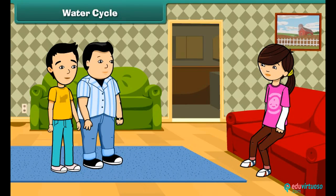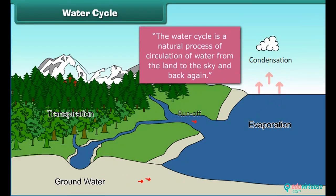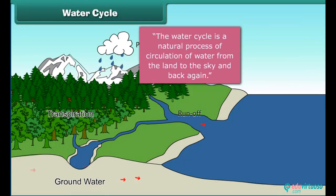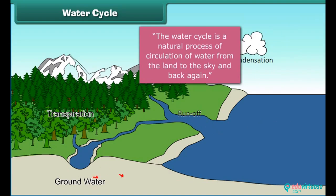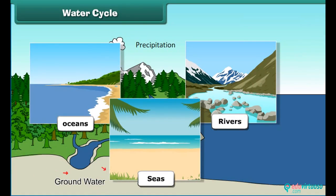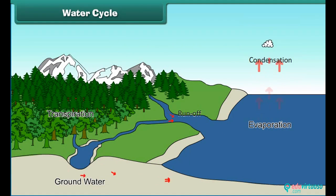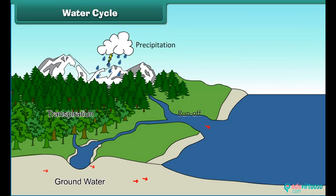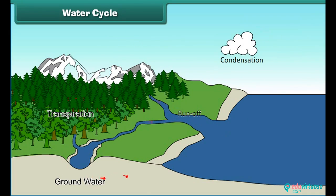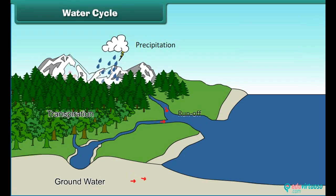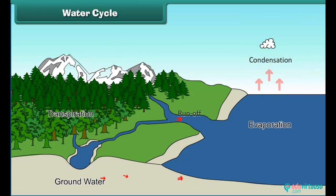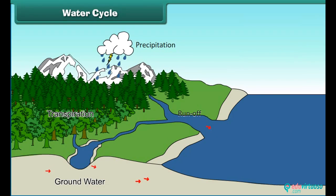Sister, yesterday you told me about the water cycle. Please tell us more about it. Okay, the water cycle is a natural process of circulation of water from the land to the sky and back to the land. Water in water bodies like rivers, seas, and oceans gets heated up by the sun and forms water vapors. This water vapor rises up in the air, gets cool, and turns into cloud and finally into rain. After raining, land water goes to lakes and rivers, which then flow back to the seas or oceans and the cycle completes. This cycle gets repeated again and again.